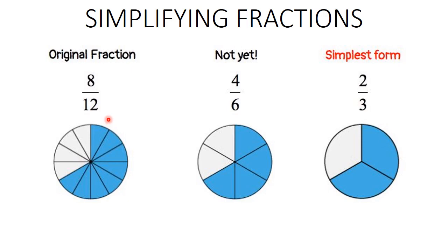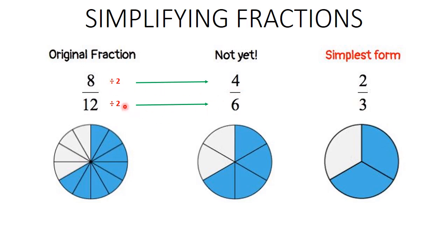We can easily convert 8 over 12 to 4 over 6 — simplify it to smaller numbers that still represent the same value. Here's what we do: divide 8 by 2 to get 4, and divide 12 by 2 to get 6. We've successfully simplified 8 over 12 to 4 over 6. We divided both numerator and denominator by the same number — in this case, 2. So 8 divided by 2 gives 4, and 12 divided by 2 gives 6.